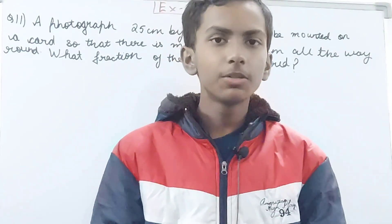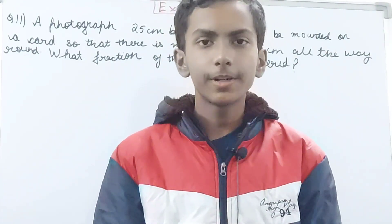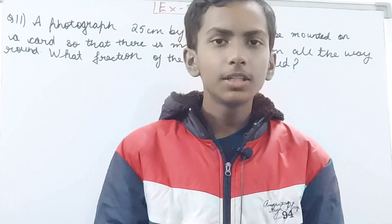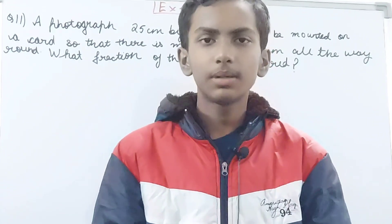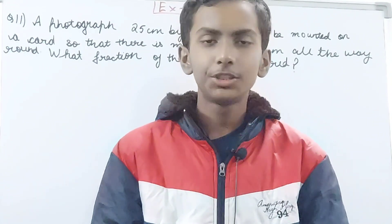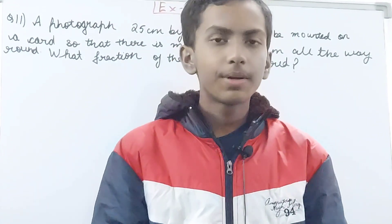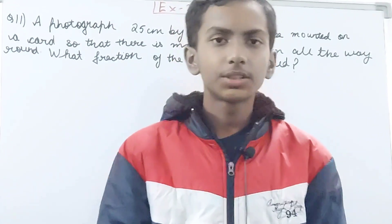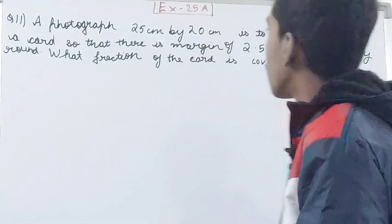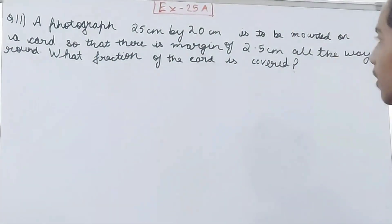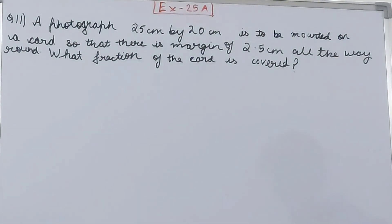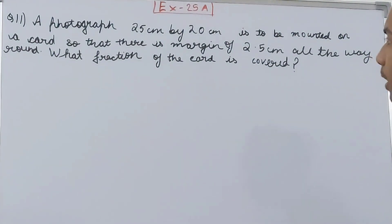Hello friends, welcome back to my YouTube channel Unlock a Learning. In this video we are going to solve ICSE Mathematics Class 8, Chapter 25, Area of Rectilinear Figures, Exercise 25A, Question 11. A photograph 25 centimeters by 20 centimeters is to be mounted on a card so that there is a margin of 2.5 centimeters all the way around. What fraction of the card is covered?